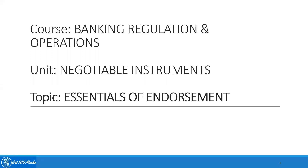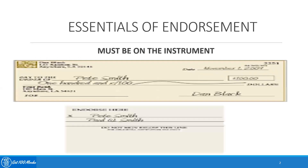Hello everyone. The course name is Banking Regulation and Operations. The unit is Negotiable Instruments and the topic that I'll be covering in this presentation is on Essentials of Endorsement. We'll be discussing the various essentials of endorsement one by one.